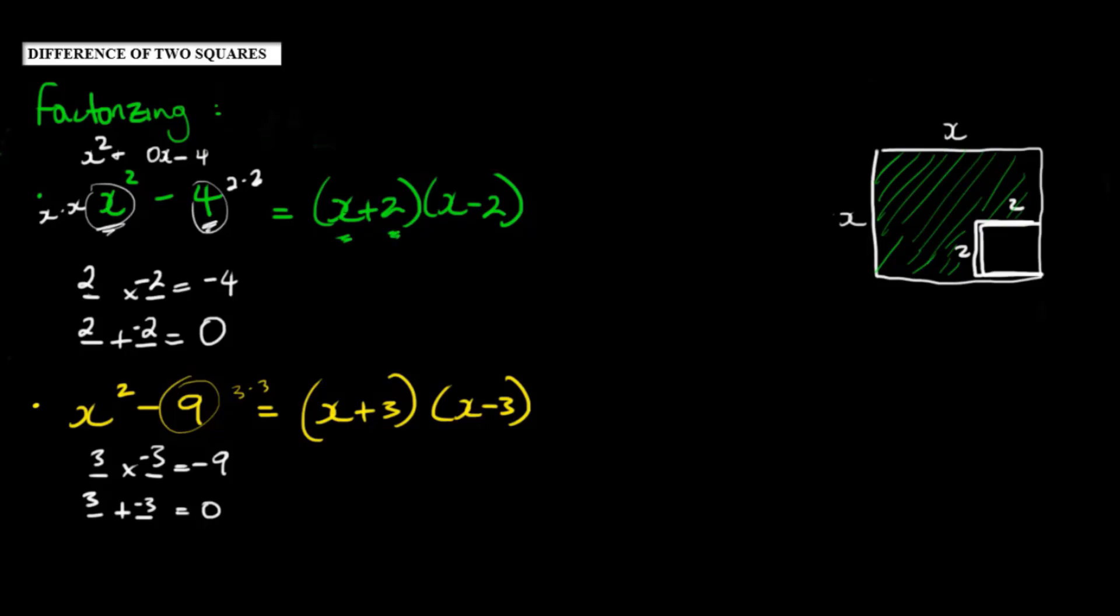So we're multiplying the sum of their roots by the difference of their roots, which would be here in this case, x minus 2. When we're dealing with x squared minus 9, we were multiplying x plus 3, where x was the root of x squared, and 3 was the root of 9, by x minus 3.